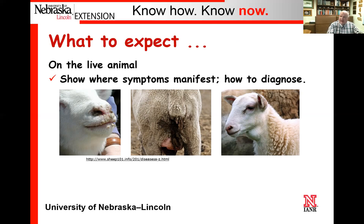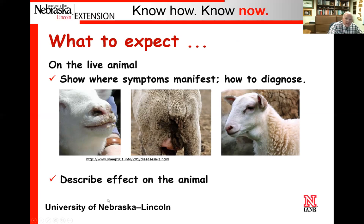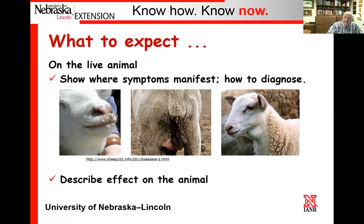Those would be examples of diseases where, okay, we've got the live animal and we think it's got this disease — you tell us where it's located, then describe what would be the effect on the animal. Perhaps the animal's not going to eat like it normally would. Mastitis is going to have an issue in terms of being able to lactate appropriately and may not be willing to let the lambs nurse. That's kind of the focus on the disease component: identification, what's an effect, how do we see what we're doing.